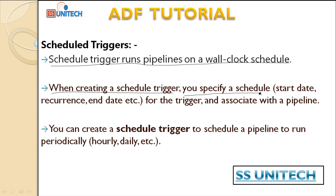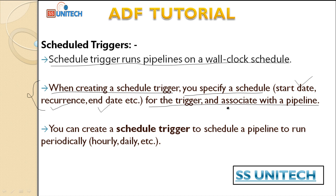When we are going to create the schedule trigger, we specify a schedule. We have to specify the start date — from which date the schedule will start. Then there is recurrence, which is basically on what period we want to execute the pipeline again. After that, an end date — on what date we want to stop this trigger. After creating the trigger, we also need to associate that trigger with the pipeline.